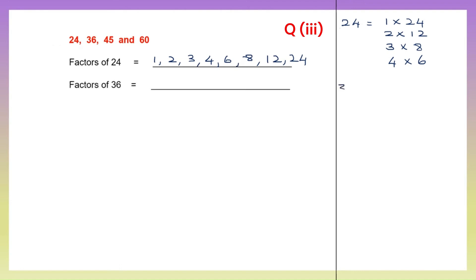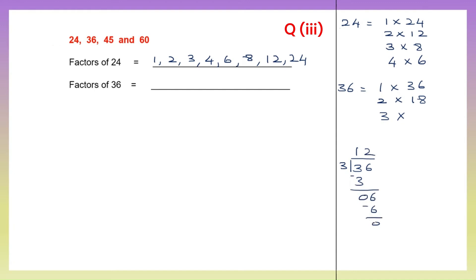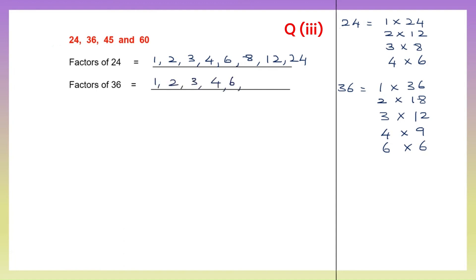Now let's get the factors of 36: 1 into 36 is 36, 2 into 18 is 36. 36 is divisible by 3 — 3 into 12 is 36. Then 4 nines are 36, and 6 sixes are 36. So the factors of 36 are 1, 2, 3, 4, 6, 9, 12, 18 and 36.